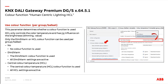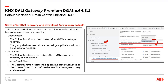The DALI gateway offers two color functions: dim-to-warm or human centric lighting. We decide per group or per ballast which to use. In our case we select the parameter 'use HCL'. We then get additional parameters. The next parameter is the state after KNX bus voltage recovery or after ETS download: three options — keep the state as before (HCL activated or deactivated as it was), activate after recovery, or deactivate after recovery.